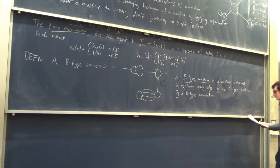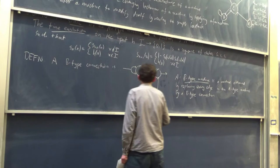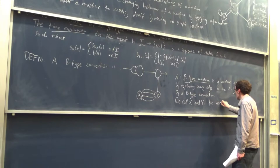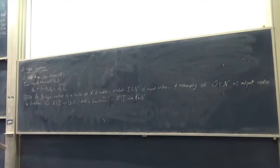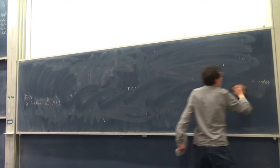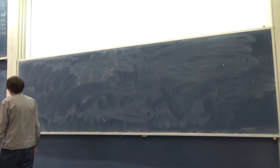I'll mark these nodes X and Y, and we call X and Y the weight nodes. It turns out that the behaviour of a B-type connection is actually determined by the weight nodes.